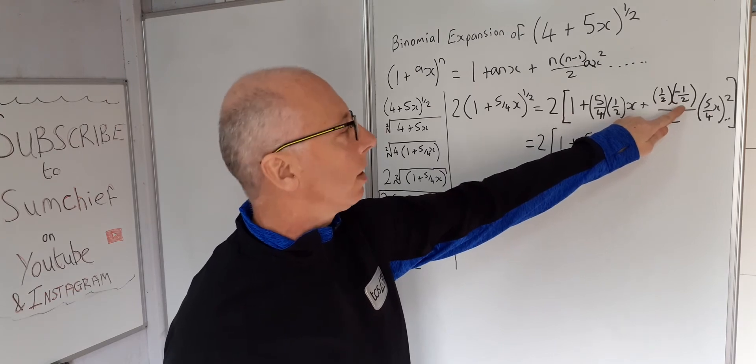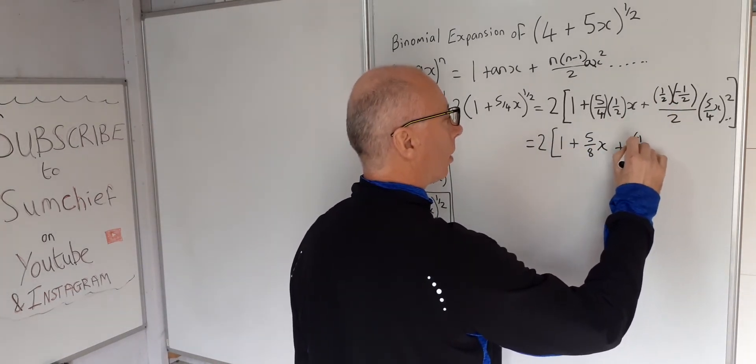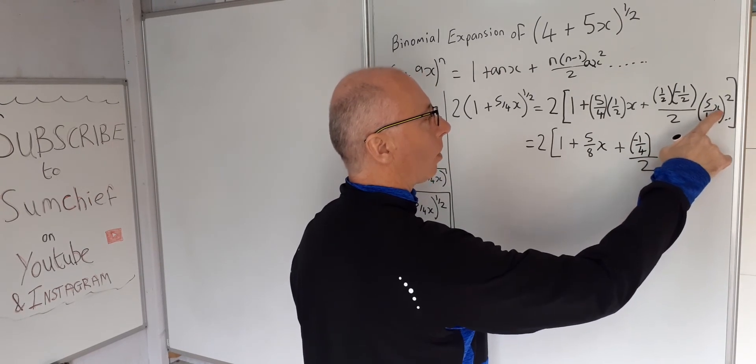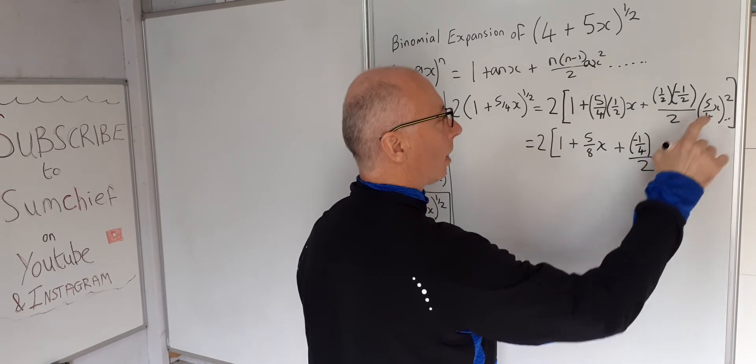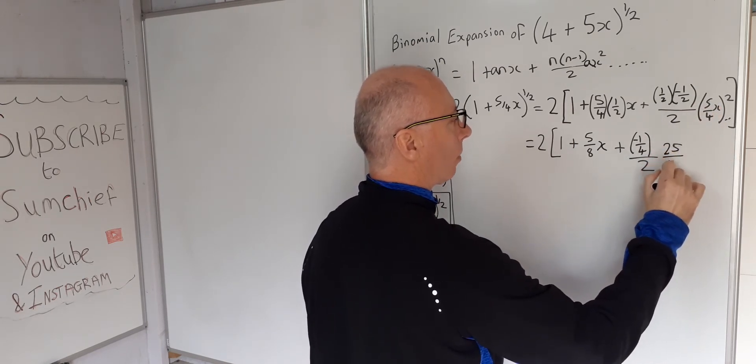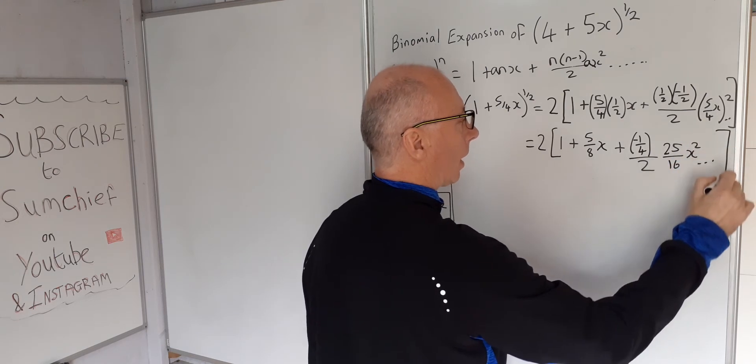Half times minus half is minus 1 quarter, over 2, and then 5 over 4, x squared, just square each term, we get 25 over 16, x squared, and that's that.